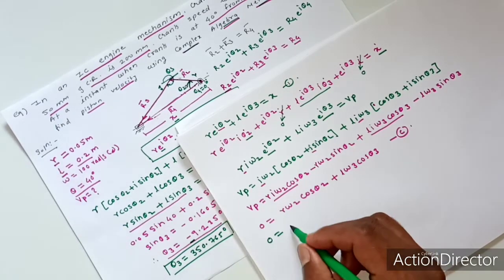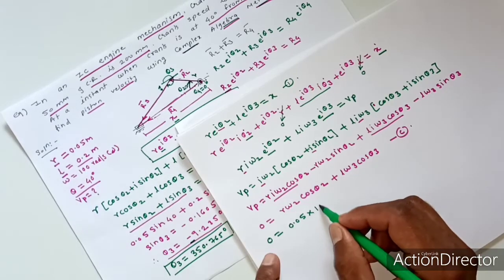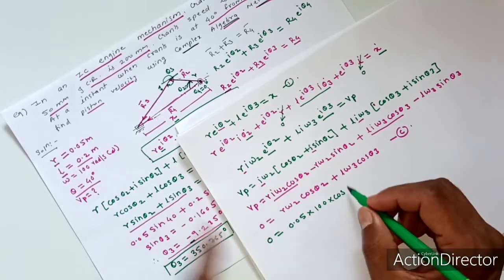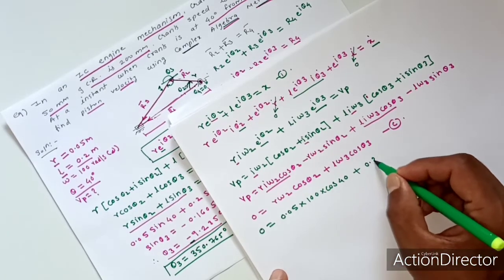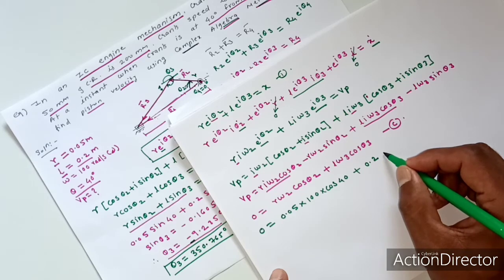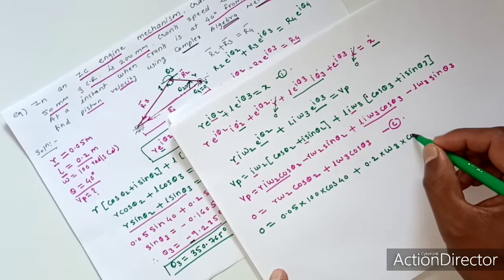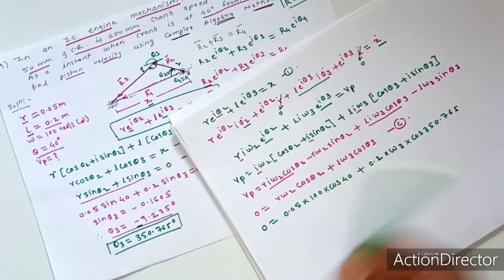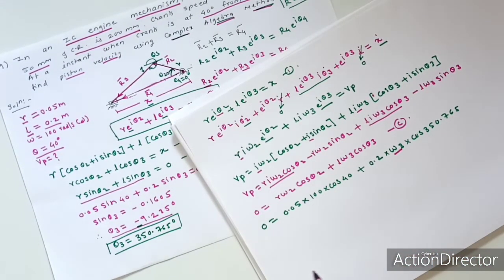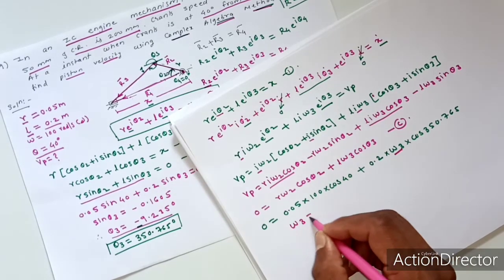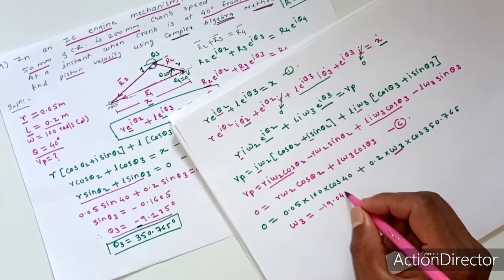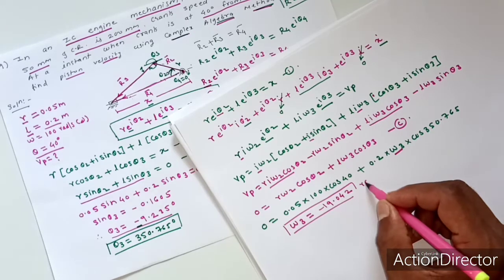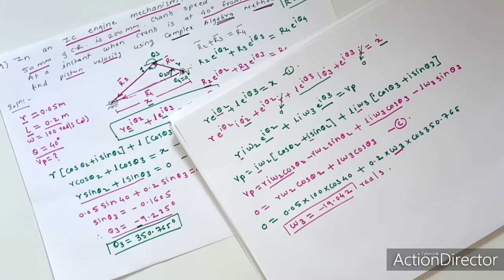Separating imaginary parts to find omega3: 0 = r*omega2*cos(theta2) + L*omega3*cos(theta3). Substituting values: 0 = 0.05*100*cos(40°) + 0.2*omega3*cos(350.765°). Solving, omega3 = -19.42 radian per second, i.e., approximately 19 radian per second counterclockwise.